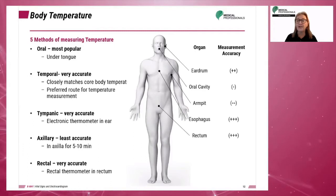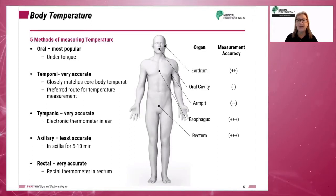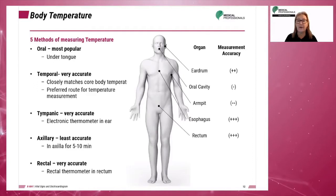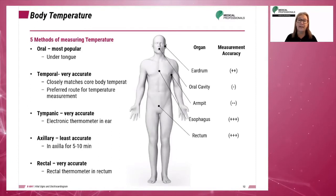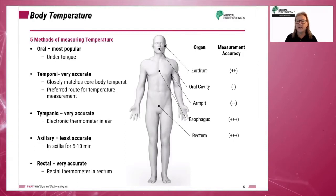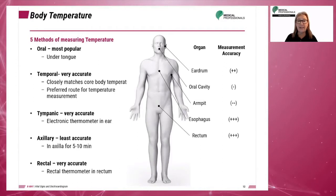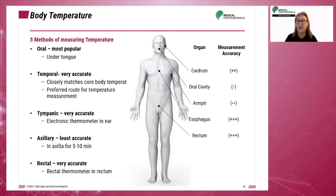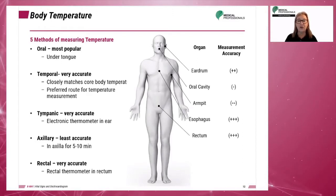Tympanic measurement uses an electronic thermometer in the ear, placed for about 3 seconds, and gives a range of 95.9 to 99.5 degrees Fahrenheit. Axillary temperature is the least accurate and the least used. The thermometer is placed in the axilla for 5 to 10 minutes, with a range of 96.5 to 98.5 degrees Fahrenheit or 35.5 to 37 degrees Celsius.